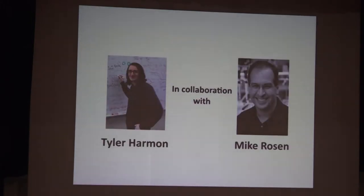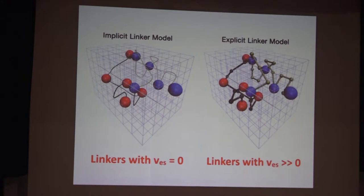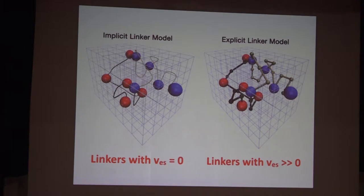A movie helps illustrate this. Here are two WW domains each connected by a linker. Here's a very compact linker with a negative effective solvation volume. Here's a linker that's completely agnostic about whether it interacts with solvent or itself. And here's a massively expanded linker. It turns out that effective solvation volume values of zero or positive make up predominantly what disordered linkers look like. We set out to ask how the effective solvation volume of disordered linkers influences the phase behavior of linear multivalent proteins — work that Tyler Harmon did as a graduate student, motivated by conversations with Mike.